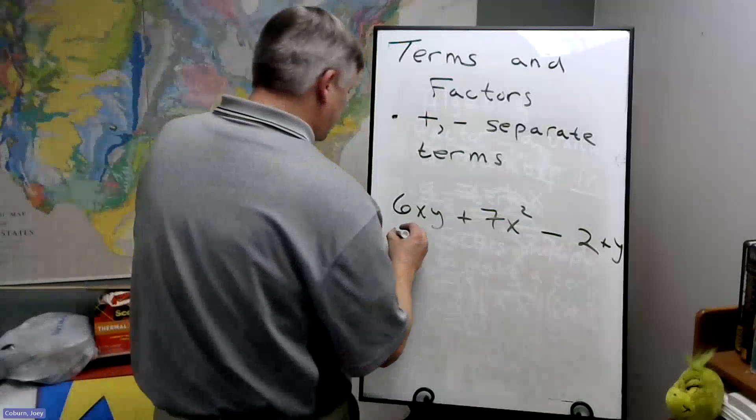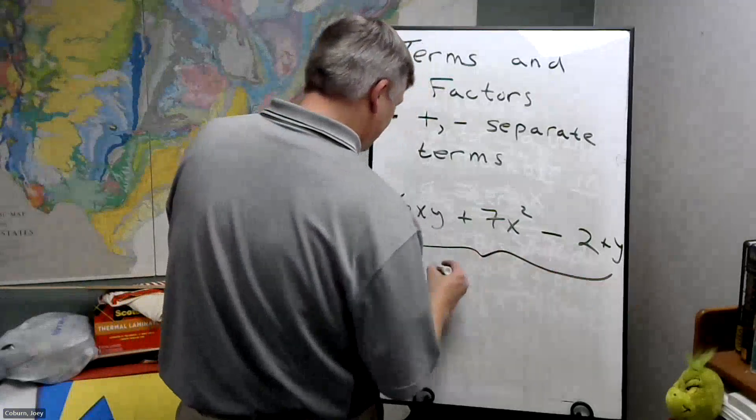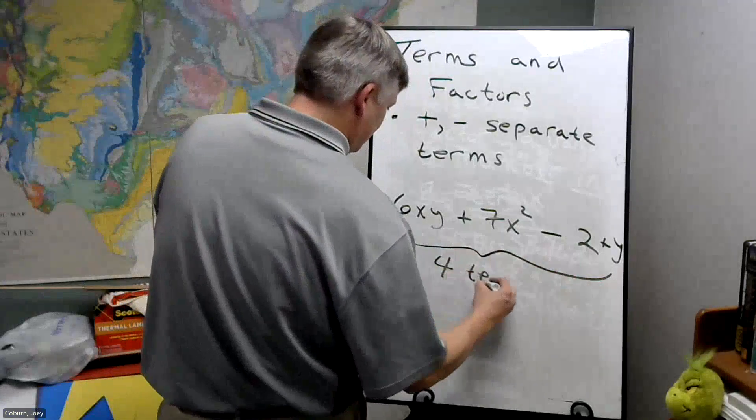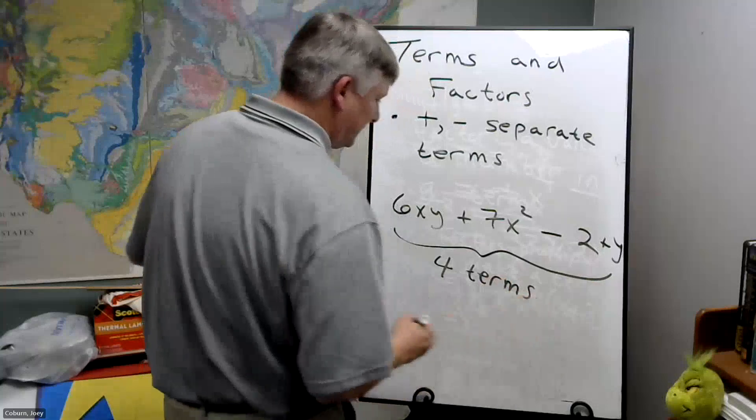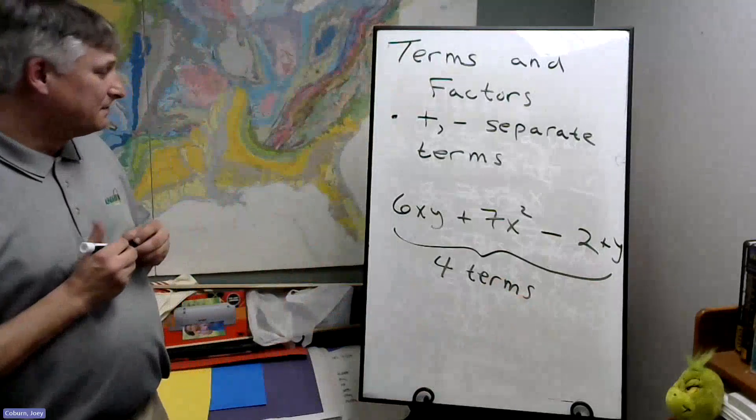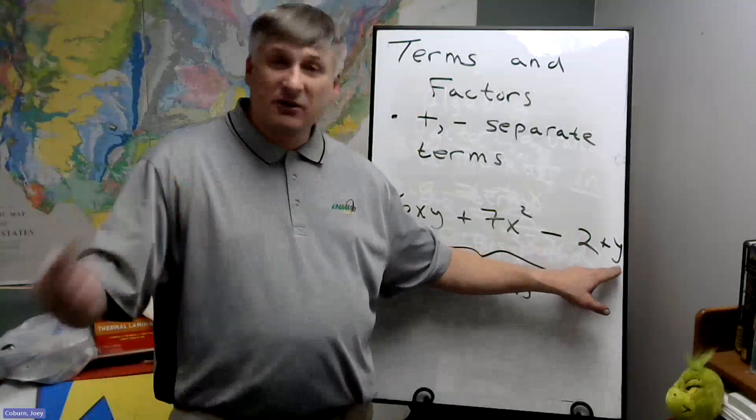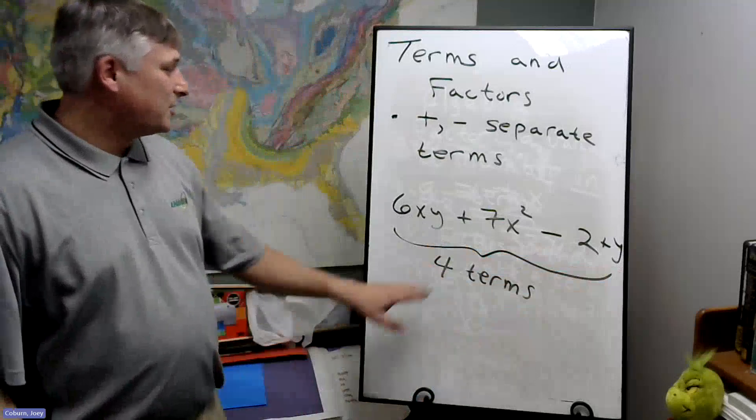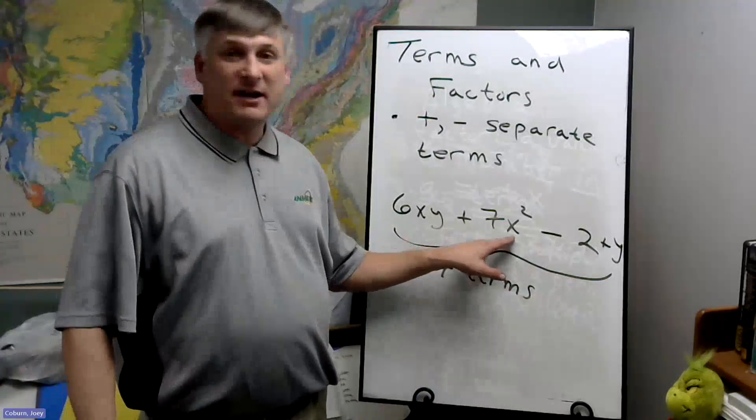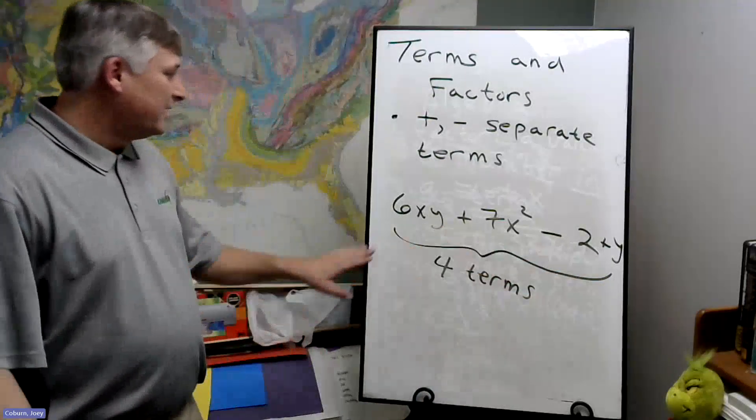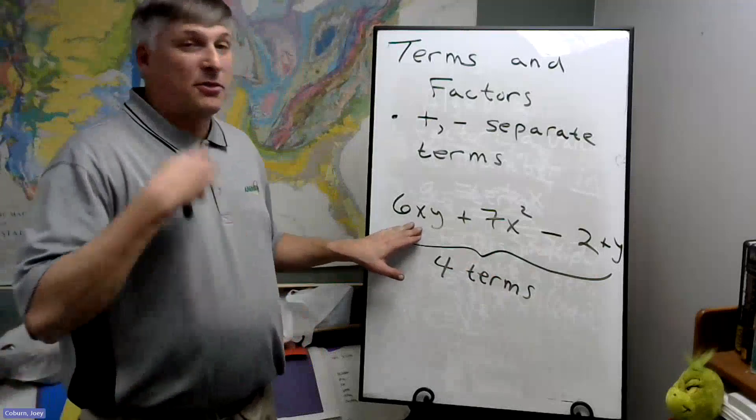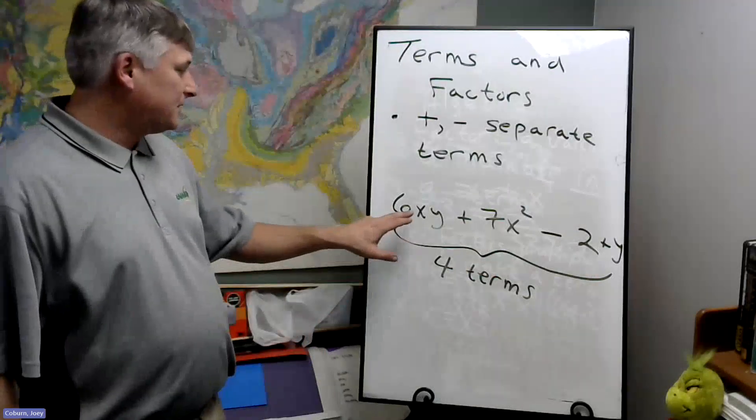So here we have four terms. This would be a term with a single factor of two. Here's a term with a single factor of Y. Here's a term with a seven and a pair of X's multiplied together. And here's a term with three factors: a six, an X, and a Y multiplied together.